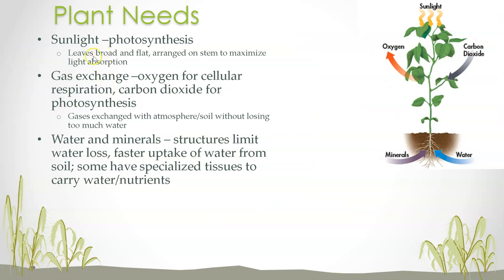Plants obviously need sunlight for photosynthesis. They need to exchange gases — they need oxygen for cellular respiration and carbon dioxide for photosynthesis. Plants do use cellular respiration: taking in glucose and oxygen to make ATP. Without ATP they wouldn't be able to live. Students sometimes only think plants photosynthesize, but that is false — they also do cellular respiration. They also need water and minerals. If you've ever added fertilizer to a garden, you've added minerals like potassium and nitrogen. There are different structures that allow plants to conserve water.